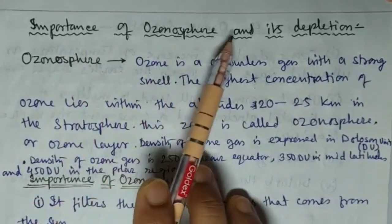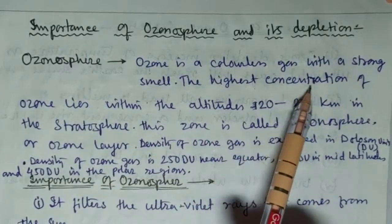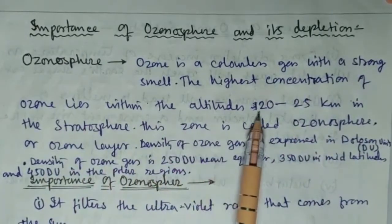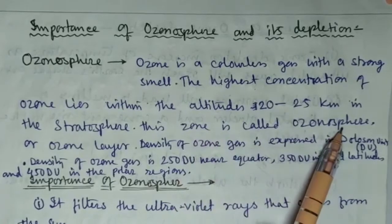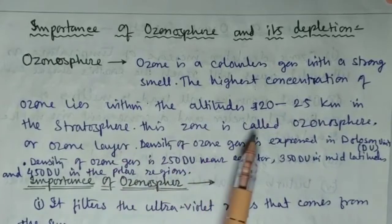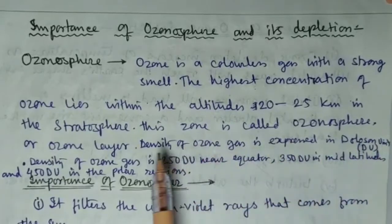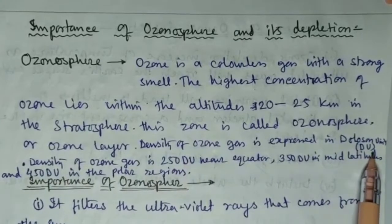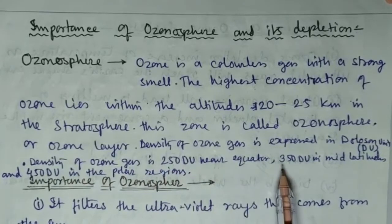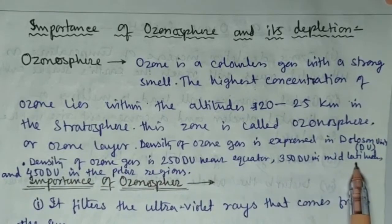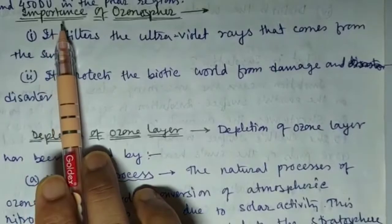Importance of ozonosphere and its depletion. Ozone is a colorless gas with a strong smell. The highest concentration of ozone lies within the altitude 20 to 25 kilometer in the stratosphere. This zone is called ozonosphere or ozone layer. Density of ozone gas is expressed in Dobson unit. Density of ozone gas is 250 DU nearer equator and 350 DU in the mid latitude and 450 DU in the polar regions.